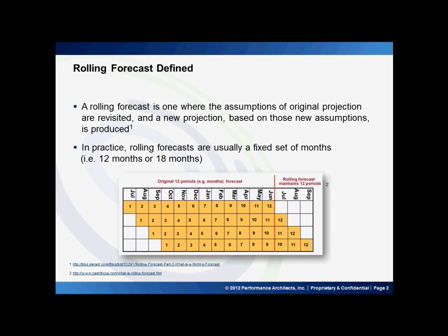Quick definition of rolling forecasts: a rolling forecast is one where the assumptions of the original projection are revisited and a new projection based on those new assumptions is produced. In practice, we often see clients do rolling forecasts for a fixed set of months, typically 12 or 18 months.